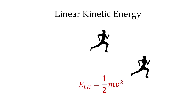This formula might look very similar to the formula for linear momentum. Linear momentum is equal to mass times velocity. Here, though, we only have one-half of the mass times the velocity, and that velocity term is actually squared. So unlike momentum, where mass and velocity are equally weighted in determining the magnitude of momentum, for linear kinetic energy that velocity term is squared, and therefore it has a more profound effect than mass in determining how much kinetic energy something has.